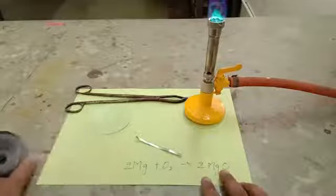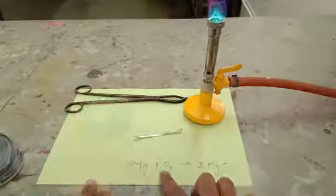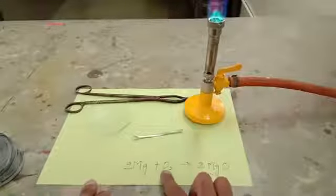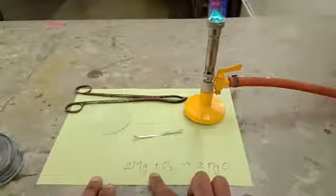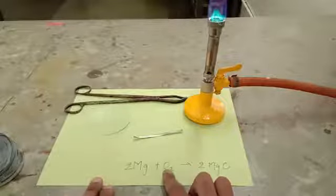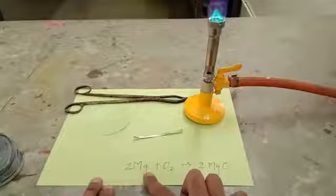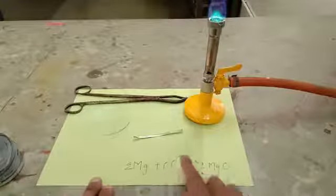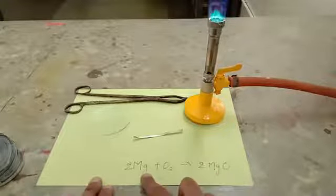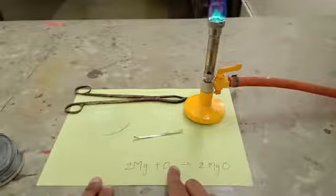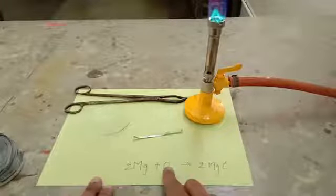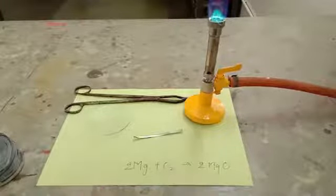When magnesium reacts with oxygen it requires heat energy and after initiating this reaction you will see that the magnesium burns in presence of oxygen to form magnesium oxide. Magnesium burns in oxygen with a brilliant white flame that is called a dazzling white flame. Very difficult to see that.